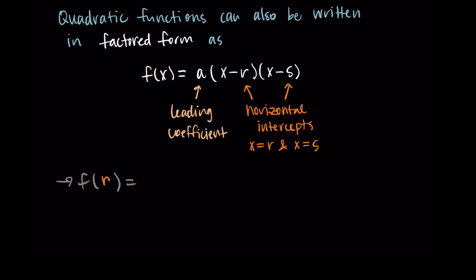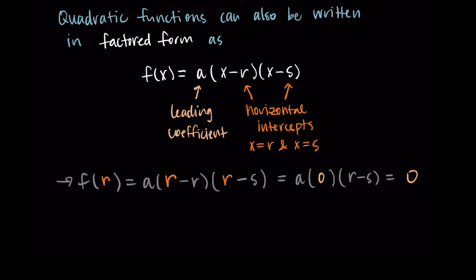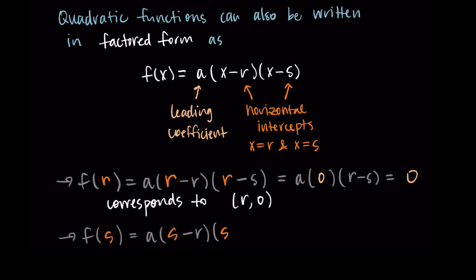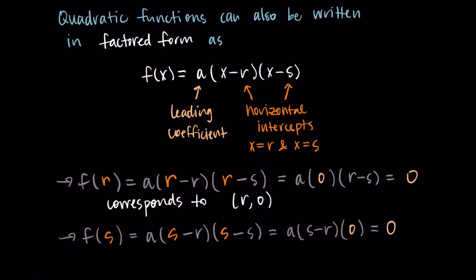If I substitute r for x, I have a times r minus r times r minus s. Now r minus r becomes zero, so I have a times zero times r minus s, and anything times zero is just zero. So I'm getting zero as my output for the input r, which means this corresponds to the point (r, 0) — a horizontal intercept. The same is true for s: substituting s gives a times s minus r times s minus s, and that s minus s becomes zero, so the output is zero, meaning (s, 0) is also a horizontal intercept.